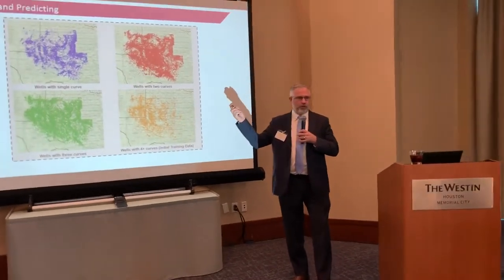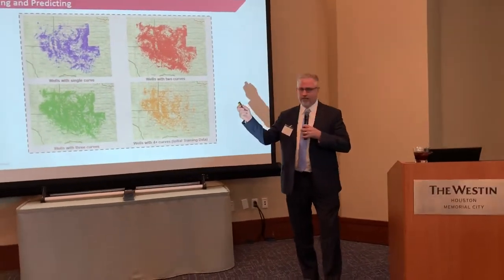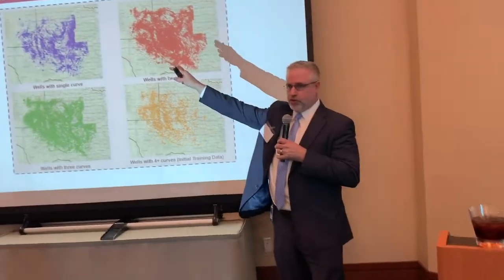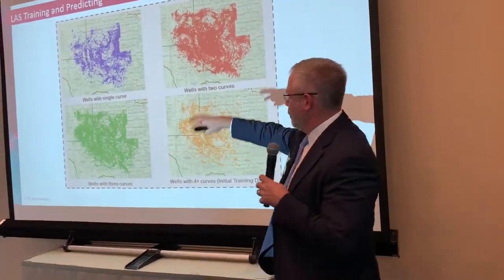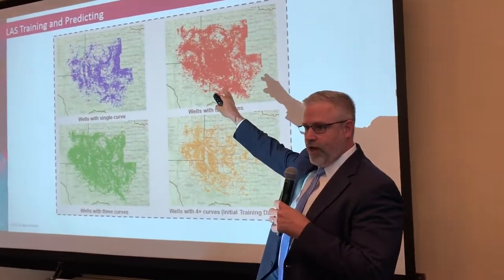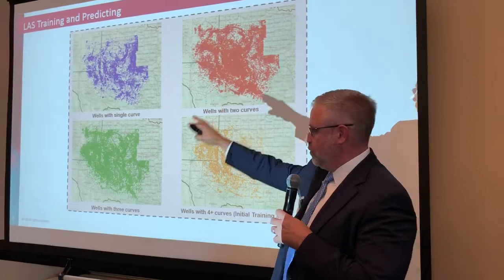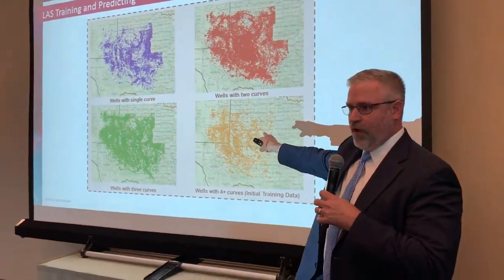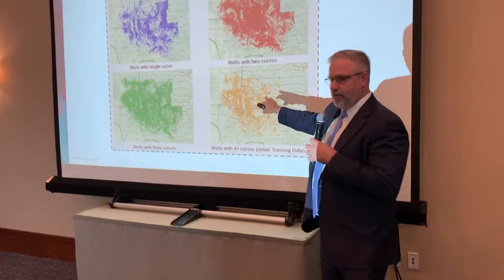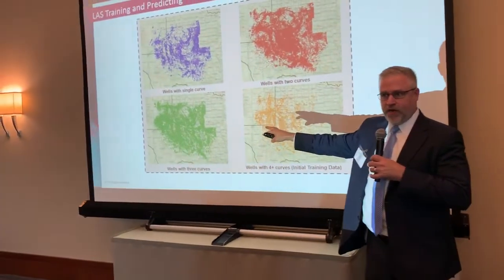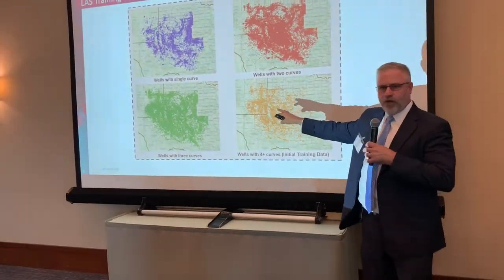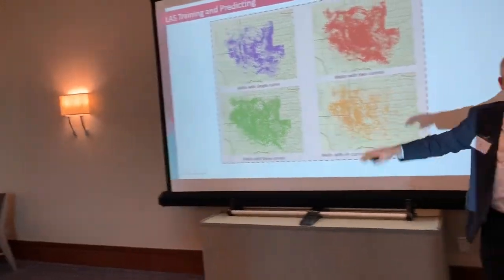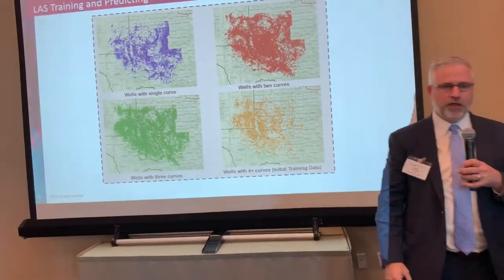What we did is we started with the Permian Basin, where you've got a lot of wells with just a single curve, usually a gamma ray, a whole bunch more that have got two curves, three, and then your typical quad combo or five curve suite. This ended up being our training data. About 42,000 wells we have with quad combo or five curve suite.